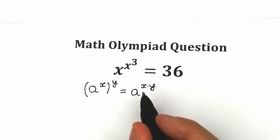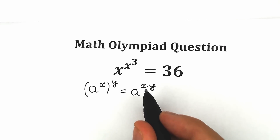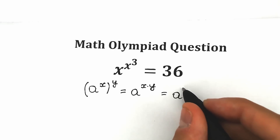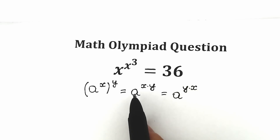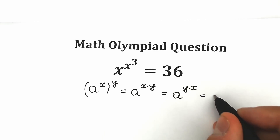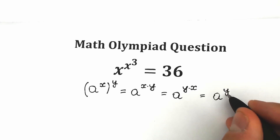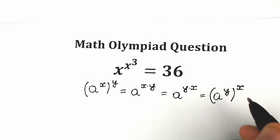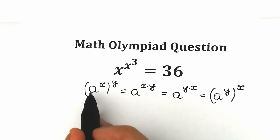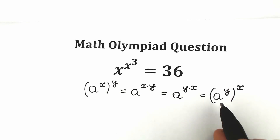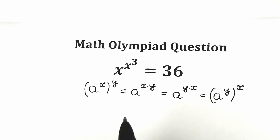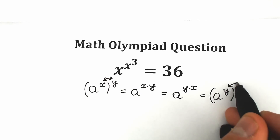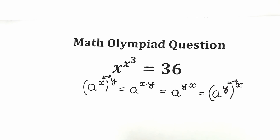Because this is a product, we can easily swap the expression, so we can write it as a to the power y times x — it changes nothing. We have a to the power y times x, and according to this property in reverse, we can write this as a to the power y, raised to the power x. So looking closely, we have all the time an equal sign. In the beginning we have a to the power x to the power y, and in the end we have a to the power y raised to the power x. We can swap x and y and the expression remains equal.